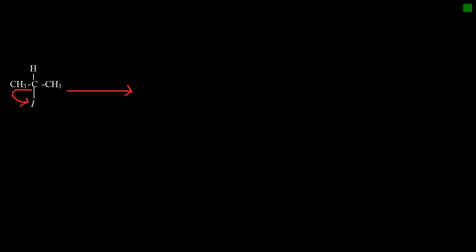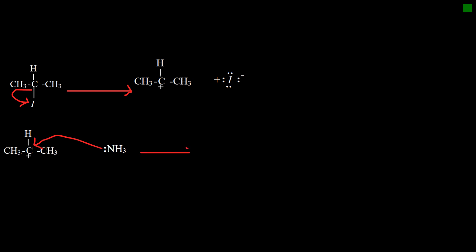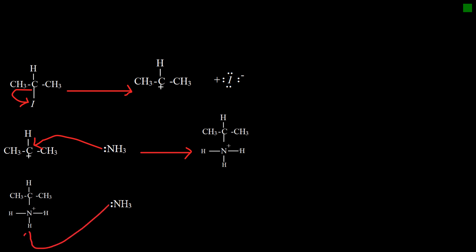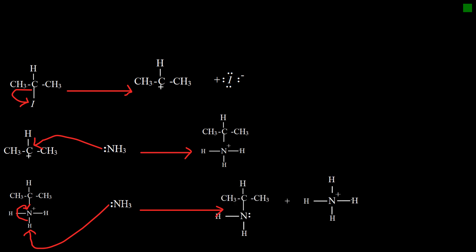For the SN1 pathway, the secondary haloalkane undergoes self-ionization to produce a carbocation. The carbocation attracts electrons from ammonia to form an ammonium ion, which is not stable. The ammonium ion is stabilized by an ammonia molecule, which abstracts one hydrogen from the ion and produces an amine molecule and an ammonium ion. This reaction happens in three steps; the first step is the slowest step and the rate-determining step, involving only one chemical species, so the mechanism is SN1.